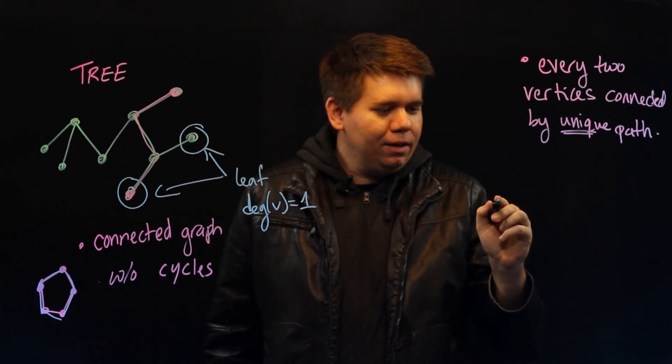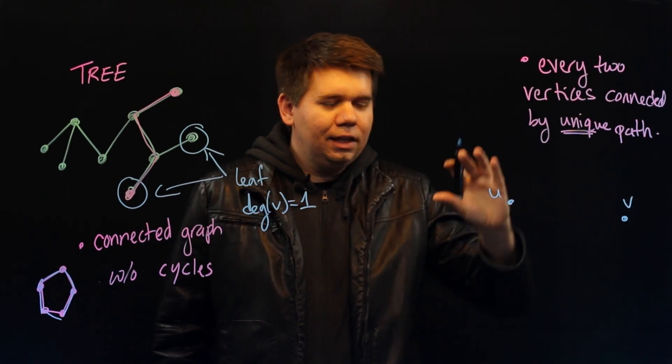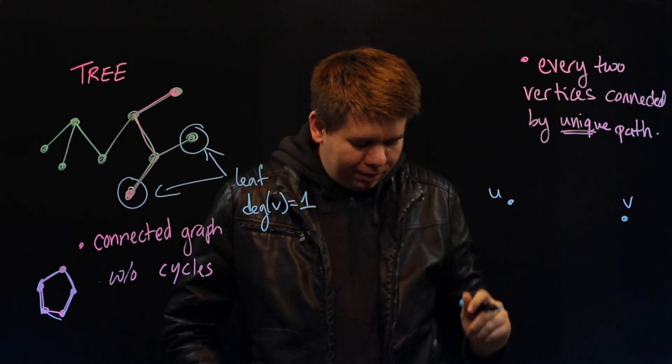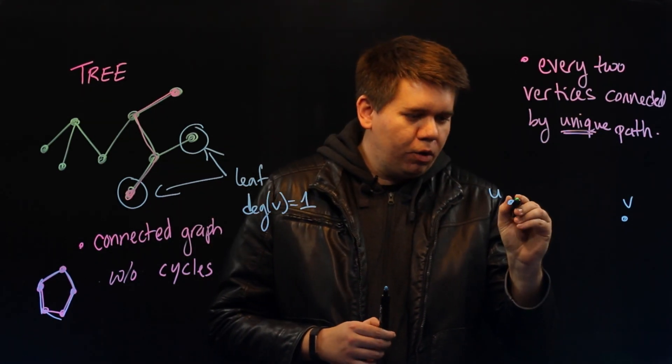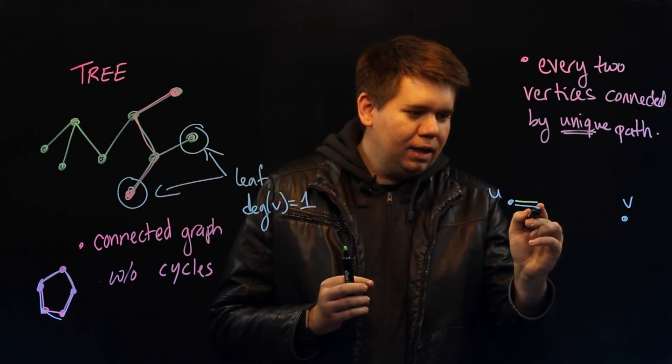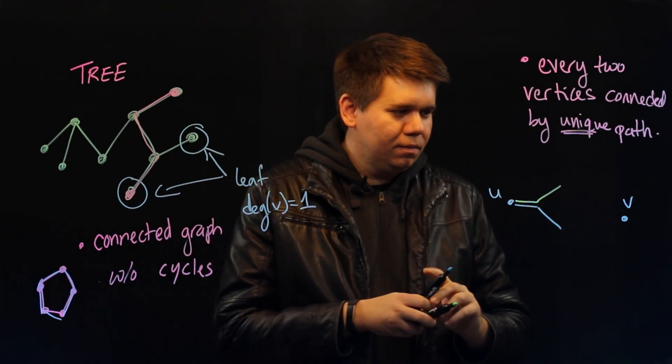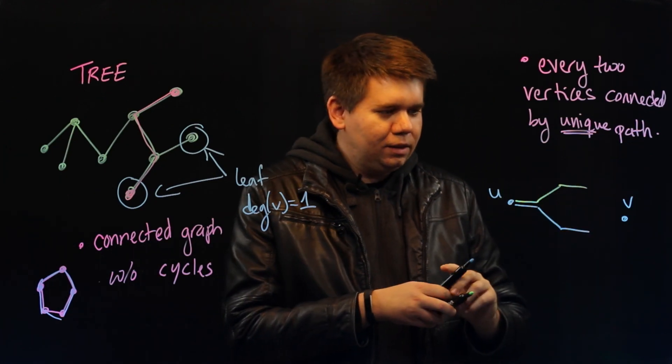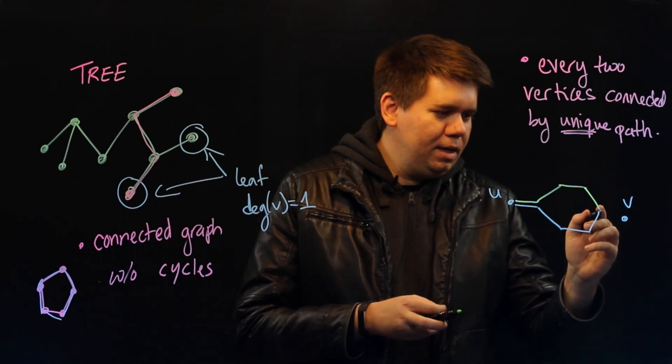So if you had two vertices, call them u and v, inside of some tree that were connected by more than one path, then we can think, well, those two paths may be the same. But if they're distinct paths, then at some point they'll have to diverge from each other. And yet, since they're going to end up at the same place, at some point those paths are going to have to converge again and meet.